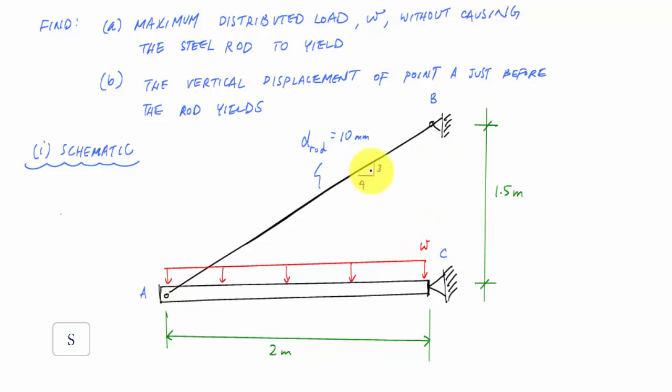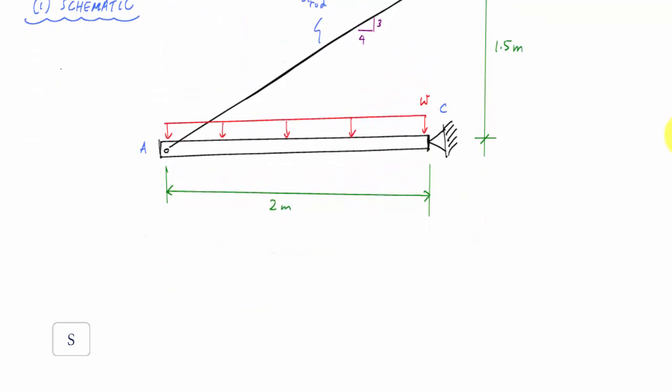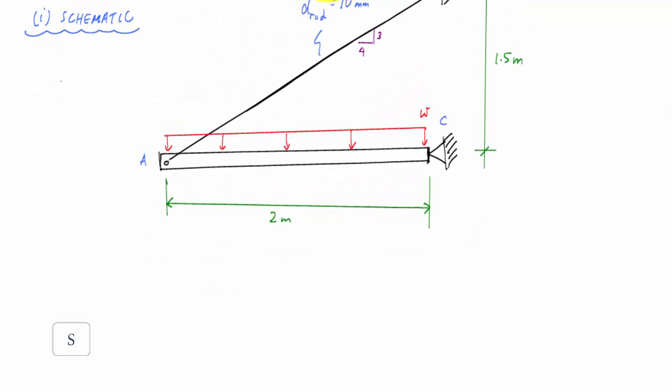You know, this is another way to apply the basic design relationship. A lot of times in design, we're trying to figure out the area. This time, we're going to use that basic design relationship and determine this maximum distributed load. So here's what the basic design relationship looks like. And in particular, because I'm so interested in the rod, the failure mode that I'm using for this basic design relationship, I'm considering the failure mode of this rod yielding.